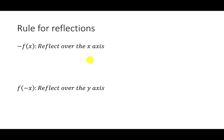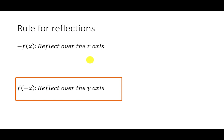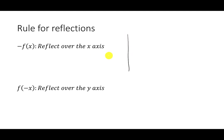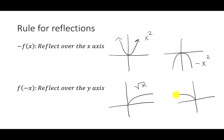The next type is reflection. A negative outside the function — meaning −f(x) — flips it over the x-axis. A negative inside — f(−x) — flips it over the y-axis. For example, x² flipped over the x-axis becomes −x². The one I always use for the y-axis is √x: the square root of negative x goes to the left instead of the right. That's √(−x).